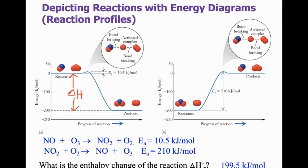If we're going from products up to reactants, it's going to be an endothermic reaction, or a positive 199.5 kilojoules per mole. So we can use these energy diagrams to help us think about enthalpy changes and activation energies and how all of these things are connected.